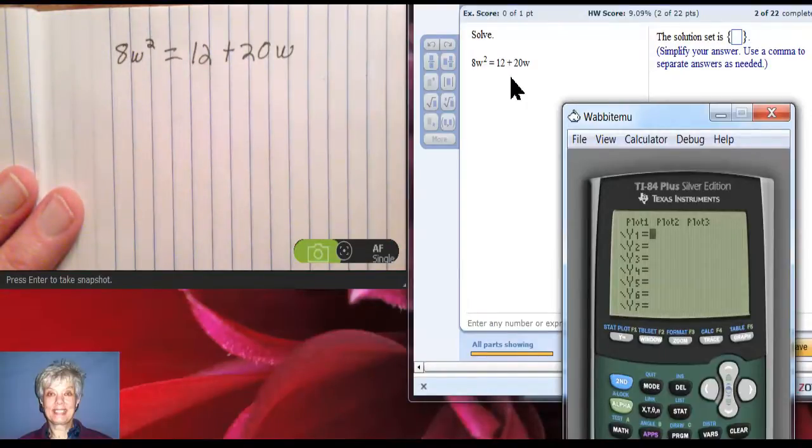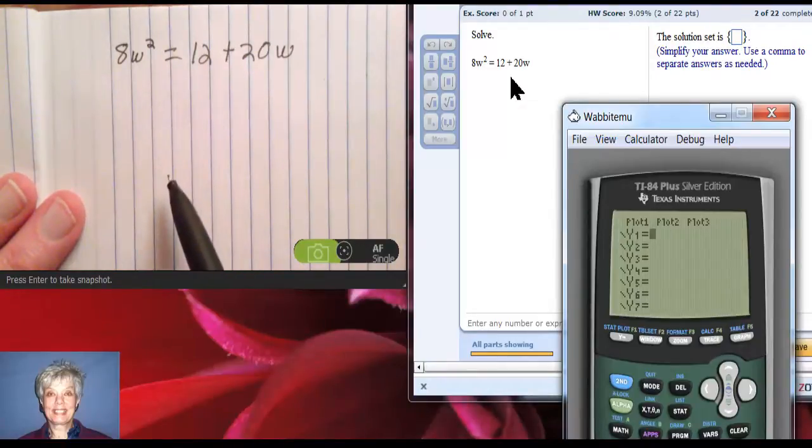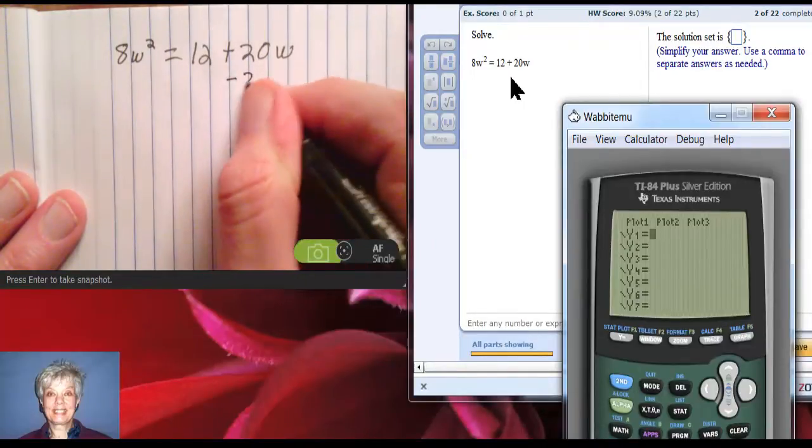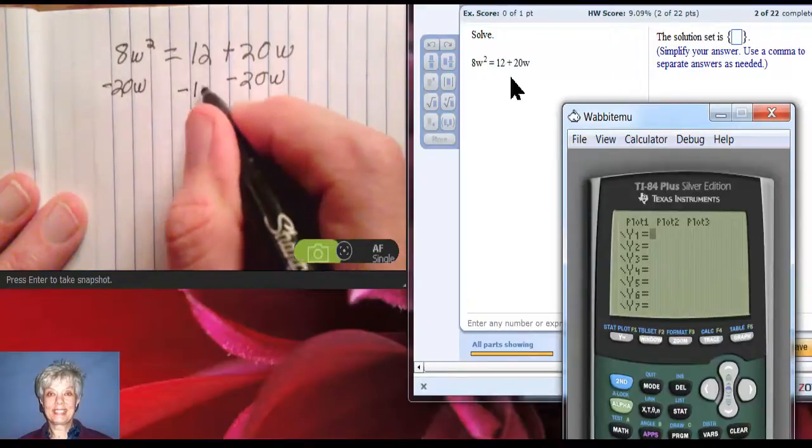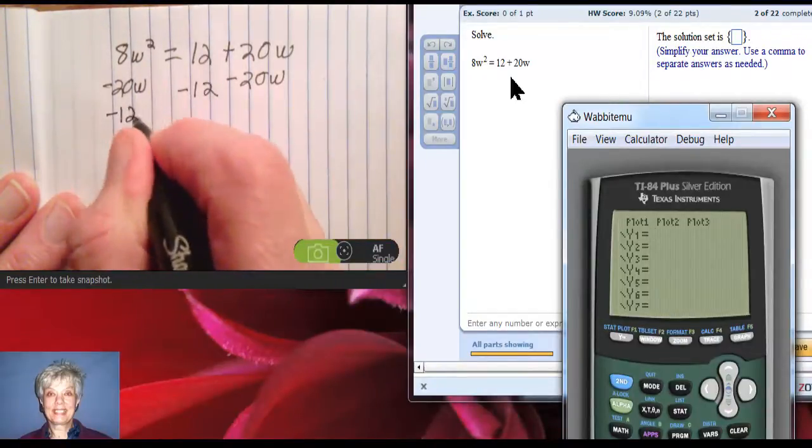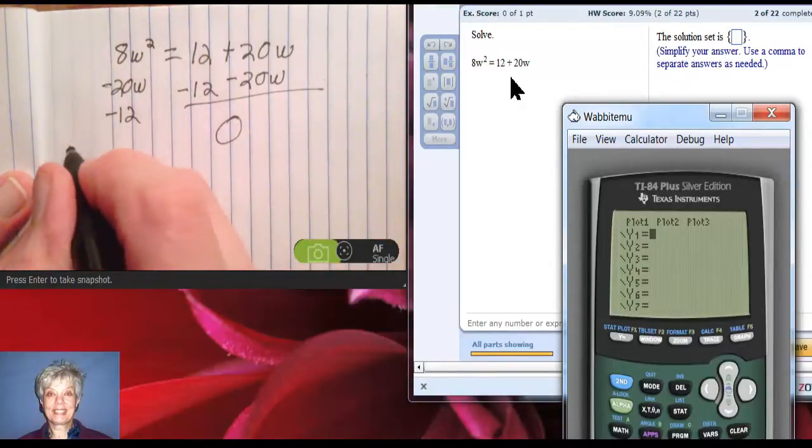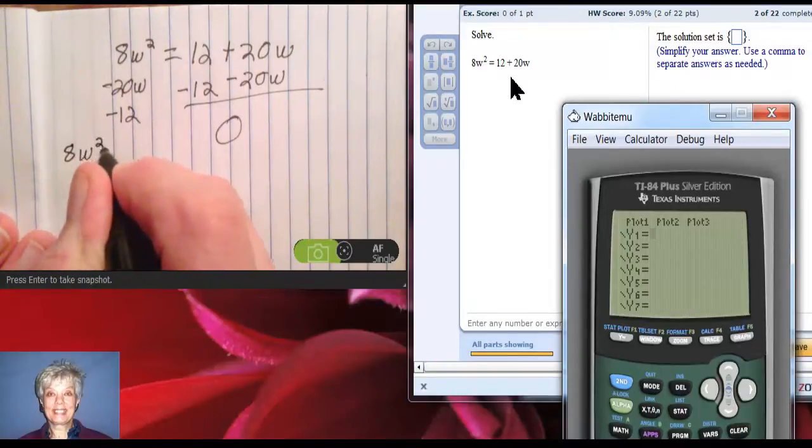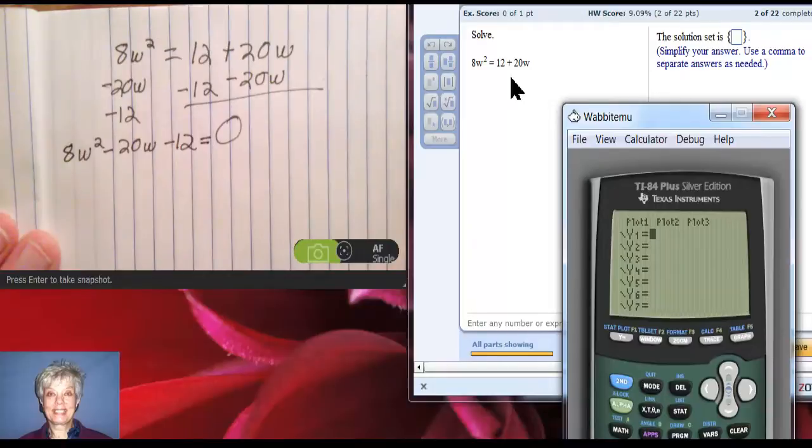All right. We are going to solve the equation 8w² = 12 + 20w. What the zero principle says is this: You can't solve this quadratic equation until you pull both of these terms over here and set the whole equation equal to zero. So let's just do it. I'm going to subtract 20w from both sides, and I'm going to subtract 12 from both sides of the equation so that I get a zero over here.